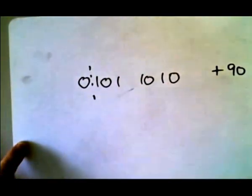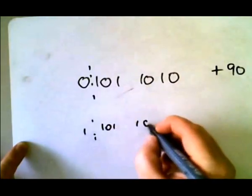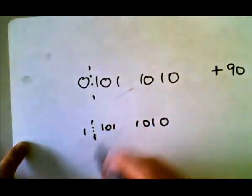If I wanted the negative version of that, I'd just swap that to a 1. You don't need to draw those dotted lines in, that's just for me to demonstrate what I'm talking about. So that would be minus 90.